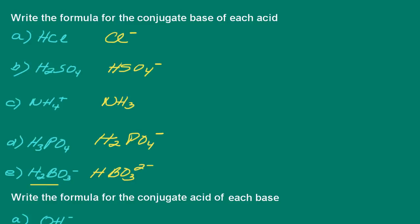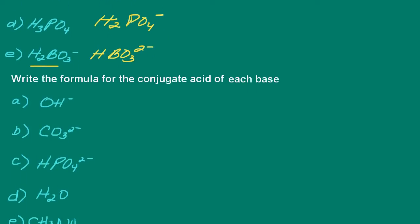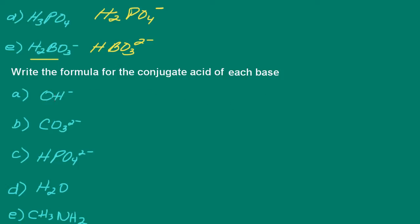Now let's write the formulas for the conjugate acid for each one of these bases. Remember, the conjugate acid is going to have one more proton than the base. For hydroxide ion, we end up with water. Notice that when a proton is added, the charge increases by one — we went from a negative charge to a zero charge, a neutral species.